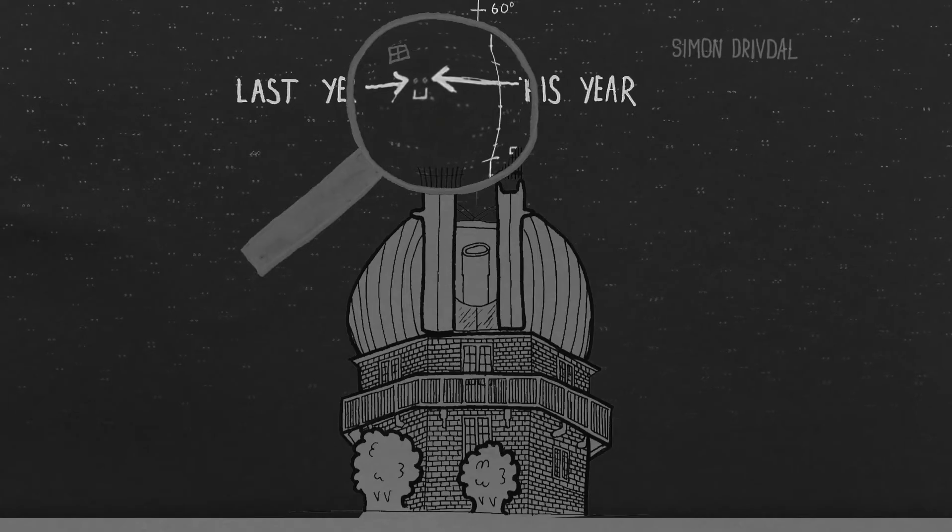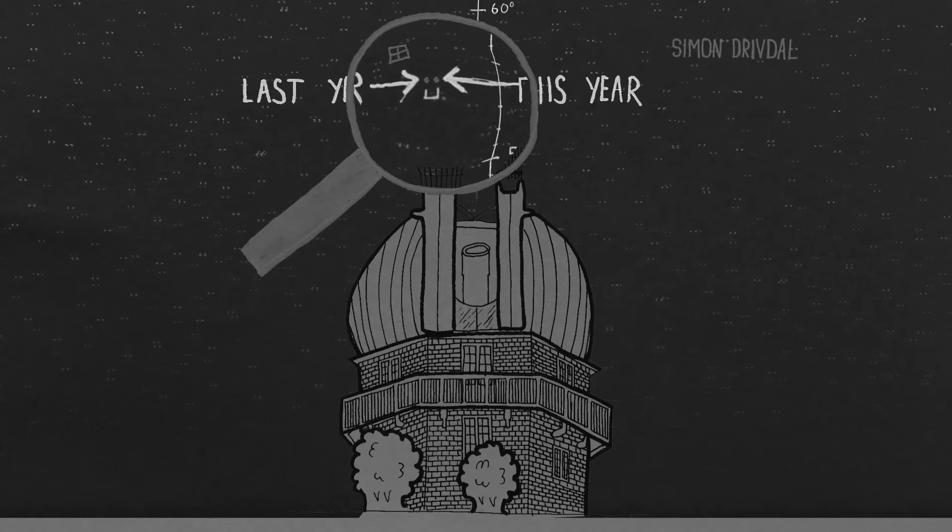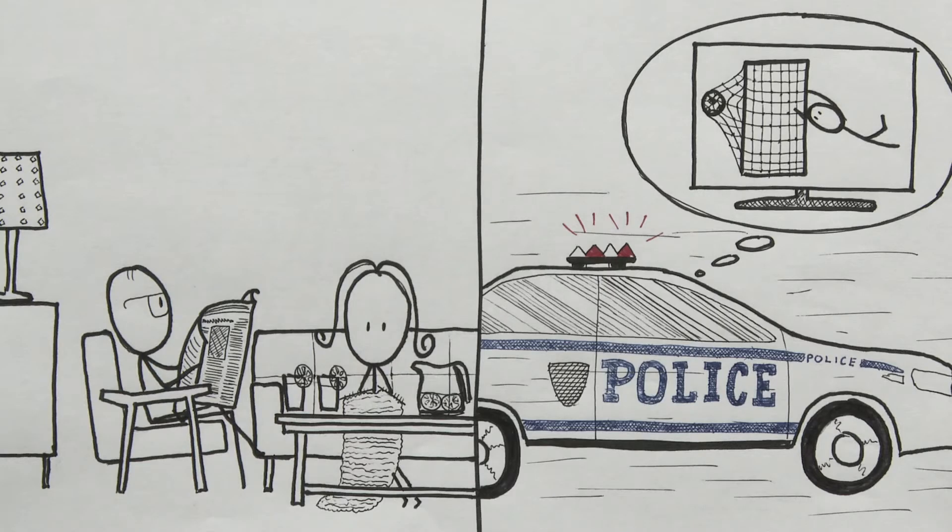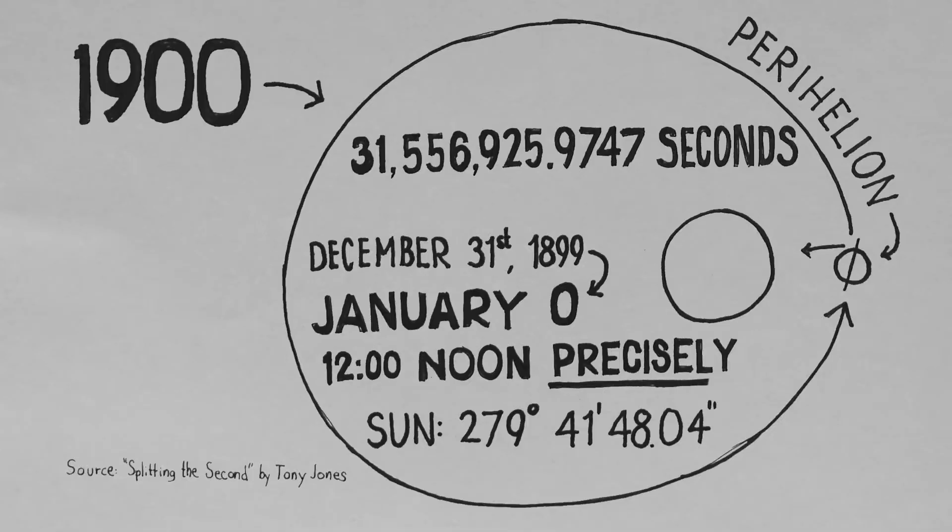As it turns out though, the orbit is precessing, and this means that no two reference points will ever be the same. Astronomers knew about this problem, but the changes were small, and time wasn't as central in life back then as it is today, and the tropical year of 1900 was agreed upon.